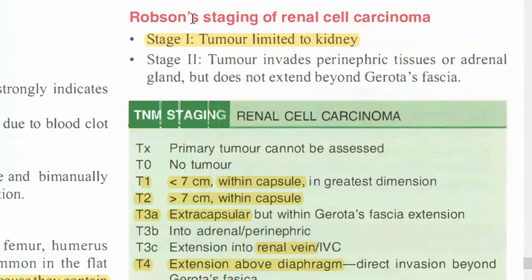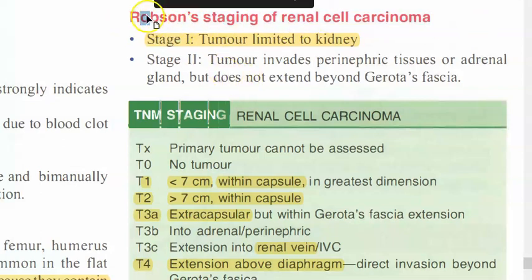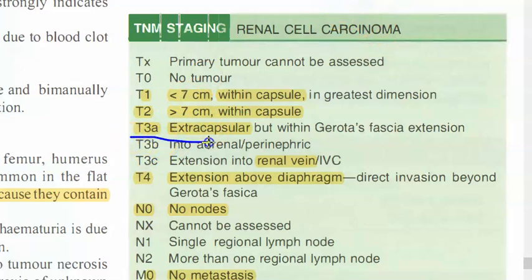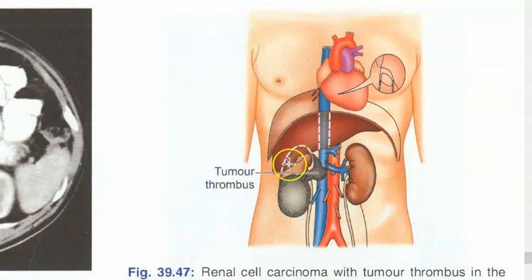The staging system used is Robson's staging for renal cell carcinoma. In TNM staging: T refers to tumor size, N to lymph node involvement, and M to metastasis. T1 is a tumor less than 7 cm, T2 is greater than 7 cm, T3 is where the tumor has gone outside the capsule and may extend into the renal vein or inferior vena cava.